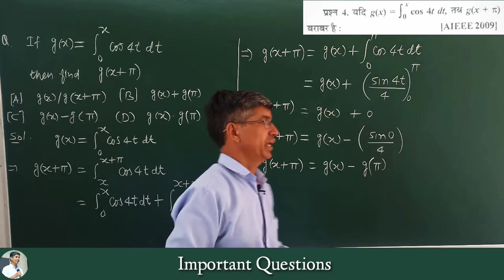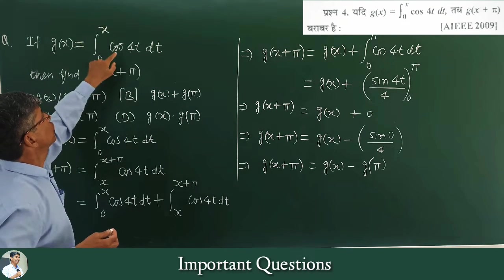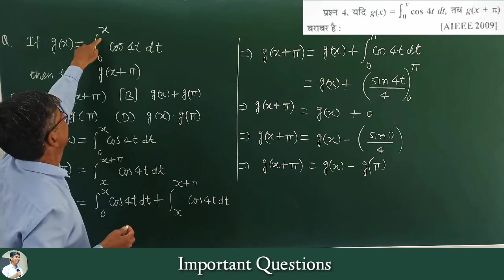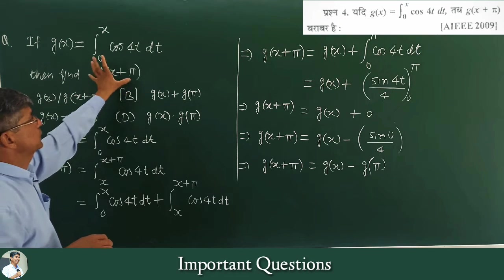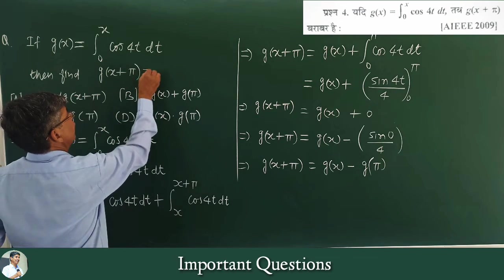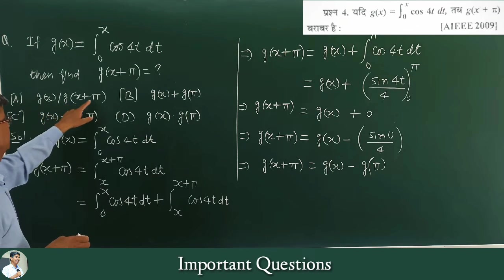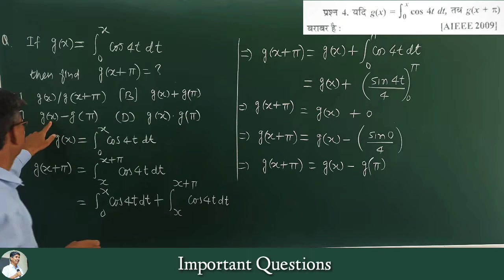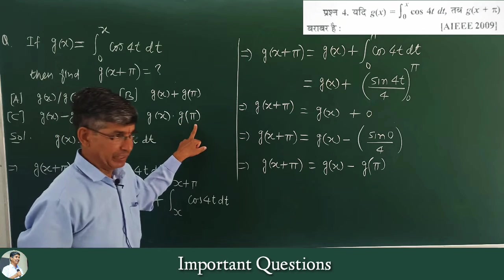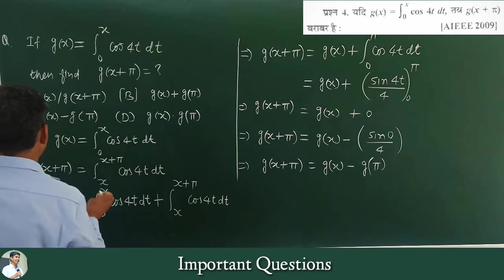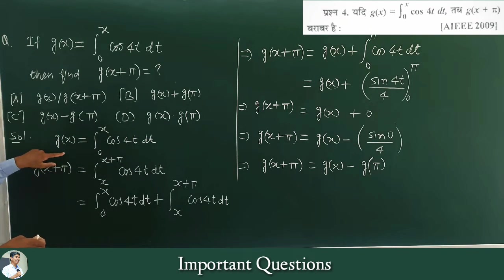The next important question: if g(x) = integral from 0 to x of cos(4t)dt, find g(x+π). The options given are: g(x)/[g(x)+g(π)], g(x)+g(π), g(x)-g(π), or g(x)·g(π). We need to determine which is correct.